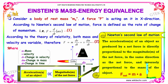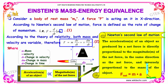Consider a body of rest mass M₀. A force F is acting in the x direction. According to Newton's second law, force is defined as the rate of change of momentum, so F = d/dt(MV). According to the theory of relativity, both mass and velocity are variables. Therefore, F = M·dV/dt + V·dM/dt. Here M is the mass, dV is the change in velocity, dM is the change in mass, dt is the change in time, and V is the velocity.